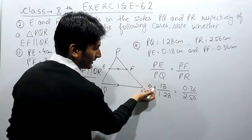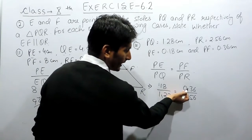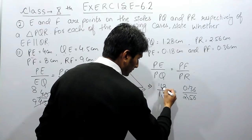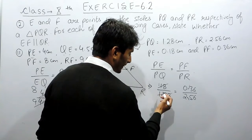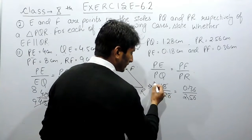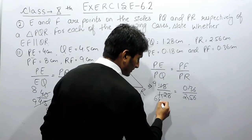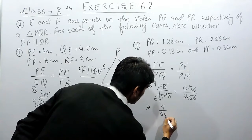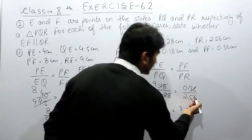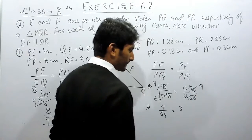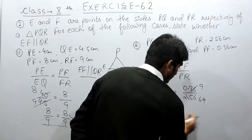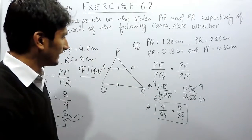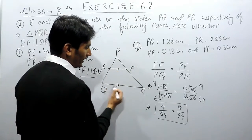Now, the decimals cancel on both sides, leaving only whole numbers. Cancelling by 6 and then by 2 gives 9 over 64 on the left-hand side. On the right-hand side, cancelling by 4 twice also gives 9 over 64. So the ratio between these two is equal, and clearly EF must be parallel to QR in this case as well.